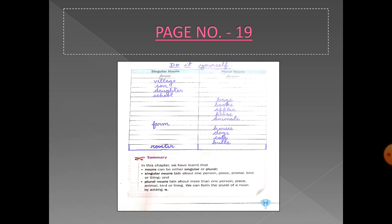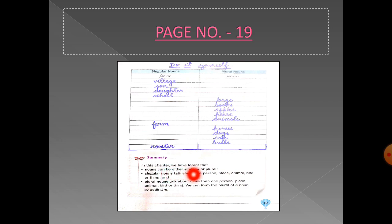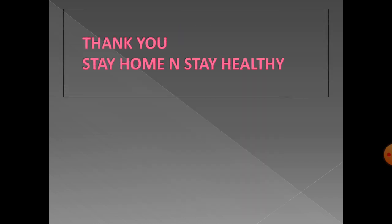Now let us have a quick recall of what we have learned in this chapter. Nouns can be either singular or plural. Singular nouns talk about one person, place, animal, bird or thing, and plural nouns talk about more than one. We can form the plural of a noun by adding 's.' I hope you have understood this chapter and will complete the book exercise. That's all for today — thank you, stay home and stay healthy.